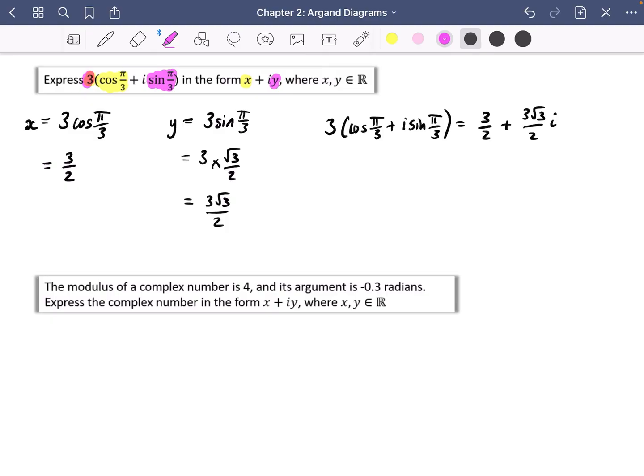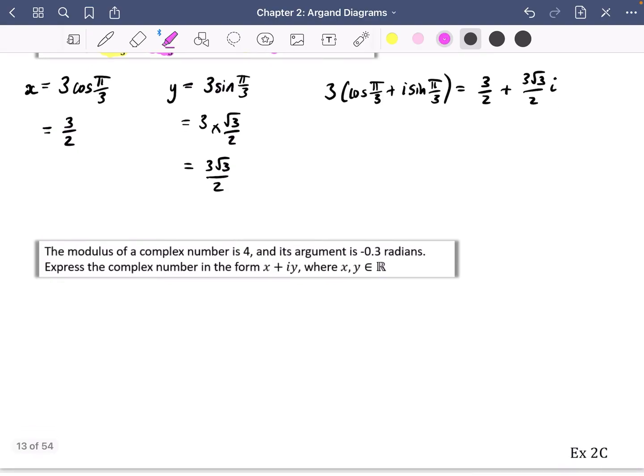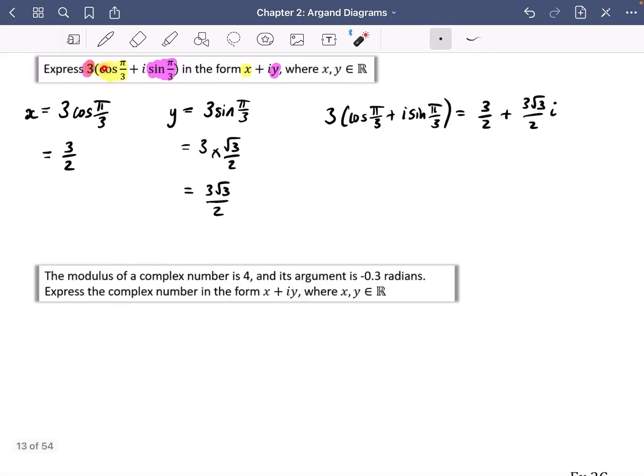Then it says here, the modulus of a complex number is four, and its argument is minus 0.3 radians. Express the complex number in the form x plus iy, where x and y are real numbers. So it might be useful to try and translate it into something that looks like this. So if the modulus of the complex number is four and its argument is minus 0.3 radians, we'll have 4(cos of minus 0.3 + i sine of minus 0.3). So I could have expanded this out to get 4 cos of minus 0.3 plus 4 sine of minus 0.3 multiplied by i.